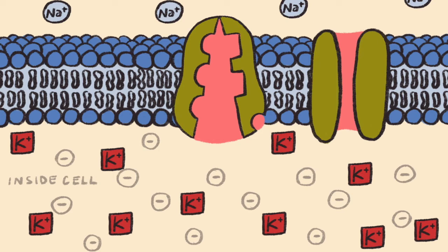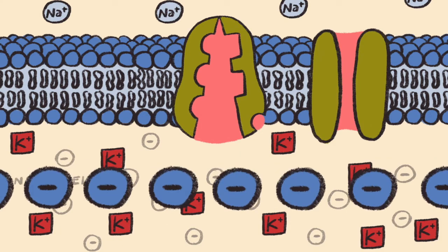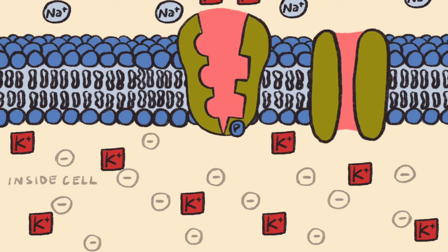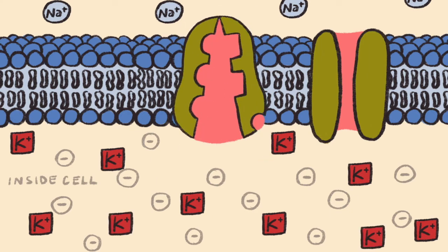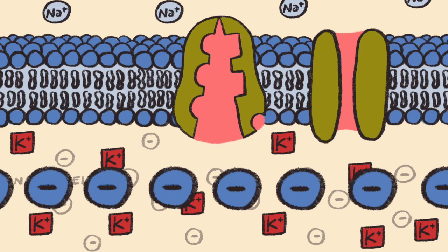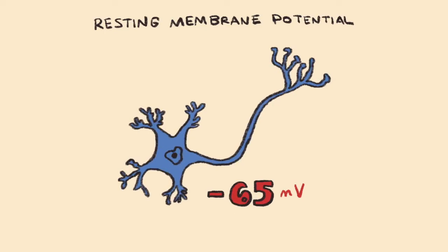The second answer lies in that inside the neuron, there are significant levels of proteins which are negatively charged. These negatively charged proteins actually outnumber the amount of positively charged potassium ions. Together, the net loss of a positive ion per pump of the sodium-potassium ATPase pumps, plus the high number of negatively charged proteins inside the neuron, results in the resting membrane potential of approximately negative 65 millivolts.